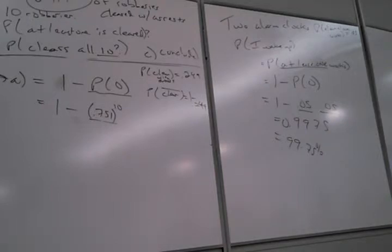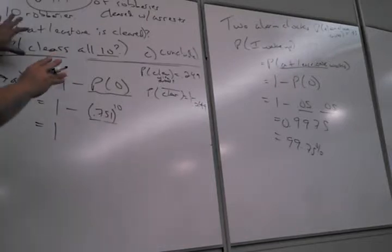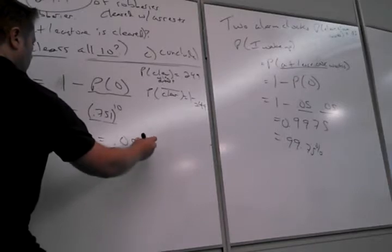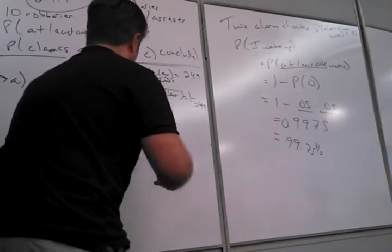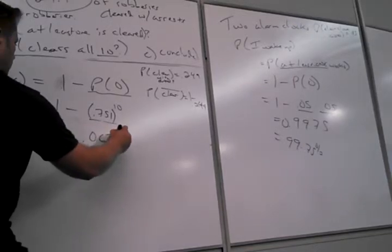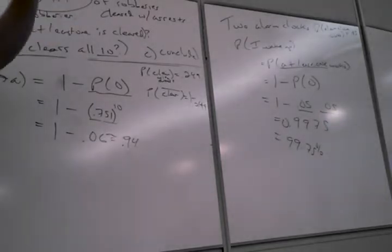So how do I do this? I'm going to have ten spots, and I want each one to not be cleared. So what do I want in each spot? 75.1% — so 0.751 to the tenth power. The probability that at least one is cleared is 1 minus 0.751 to the tenth power. The probability not cleared is 1 minus 0.249 = 0.751. What do you get? About 0.06888. So there's almost a 94% chance that at least one of those robberies is cleared. Only about 6% of the time will they have none cleared with arrest.